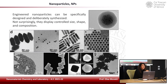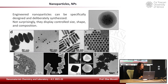Engineered nanoparticles can now be specifically designed and deliberately synthesized by scientists. They can display controlled and tunable size, shape, and composition. The most commonly studied are based on gold, silver, and other precious metals, but also on metal oxides, silica, titania, and many other elements. In terms of morphology, you can see here nanospheres, nanocubes, nanotriangles, nano-octahedra, nanostars, and nanorods.